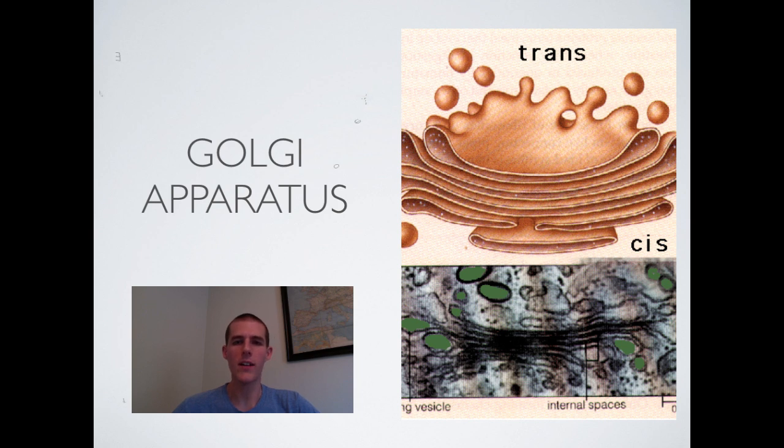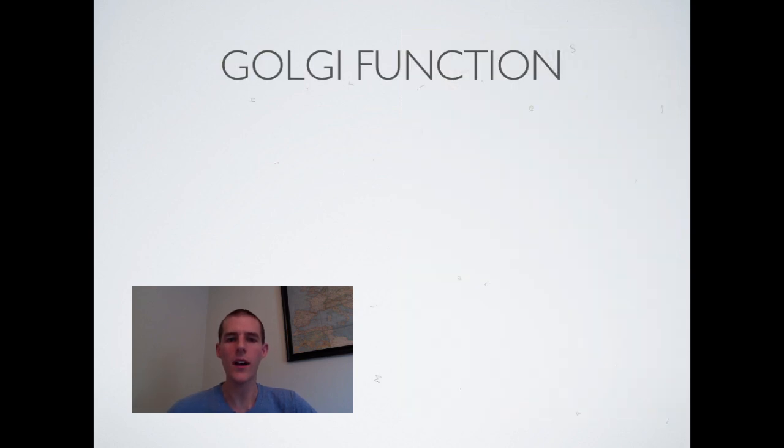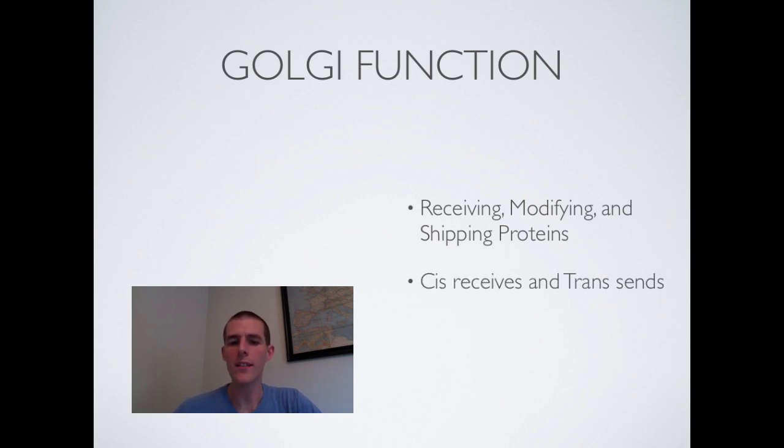Now let's talk about the Golgi apparatus, our resident stack of pancakes. It is known as the FedEx of the cell. Up there on the top, you've got the traditional cartoon version of it. Down on the bottom, you can see those flat little black lines. That is the Golgi apparatus in, I guess you would say, micrograph form. And like I already said, it is known as the FedEx of the cell. We'll talk about why that is now. So inside of the cell, you've got the Golgi apparatus. And its major jobs are receiving, modifying, and shipping proteins.